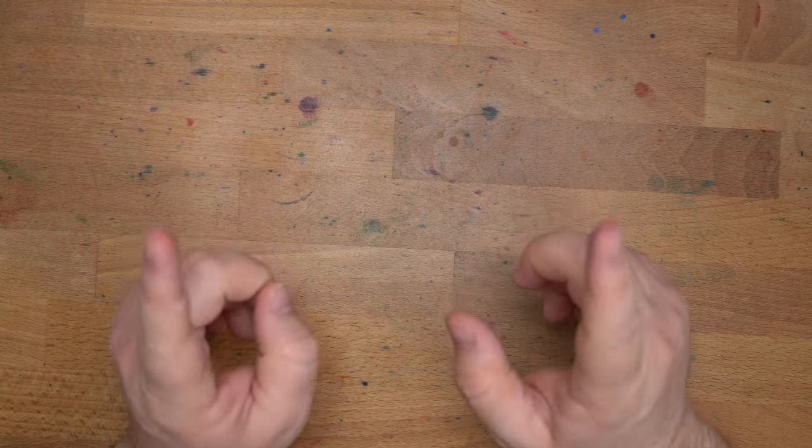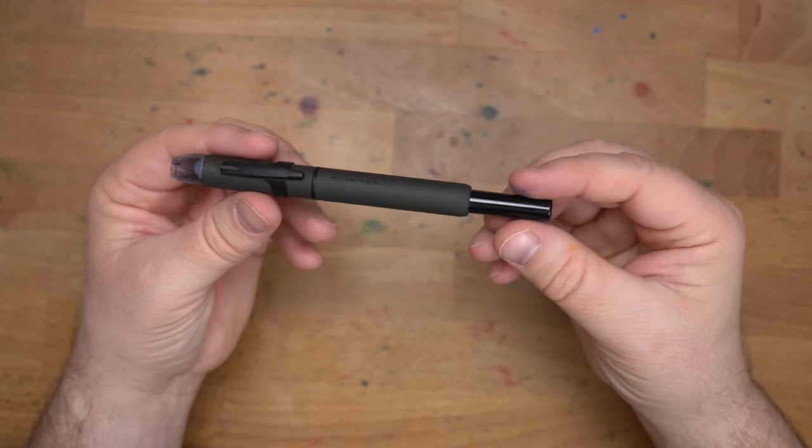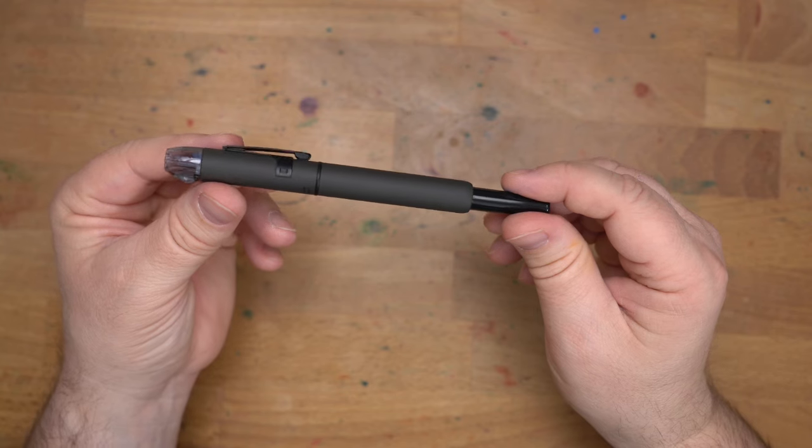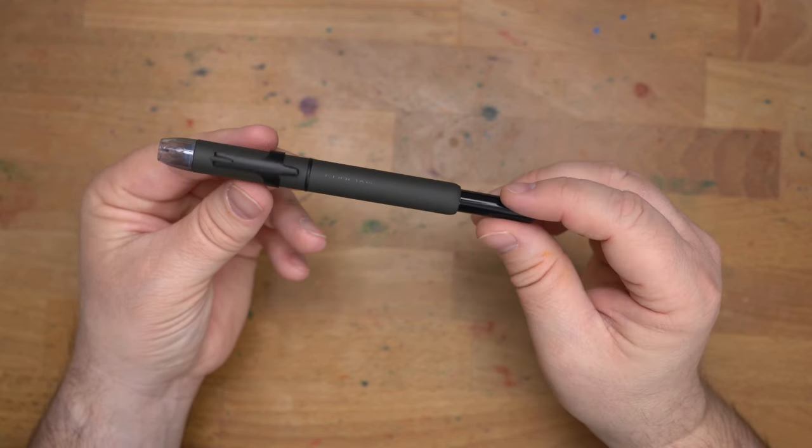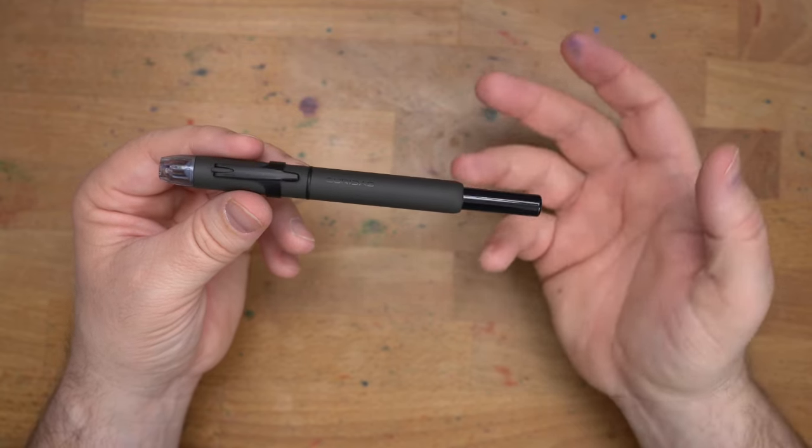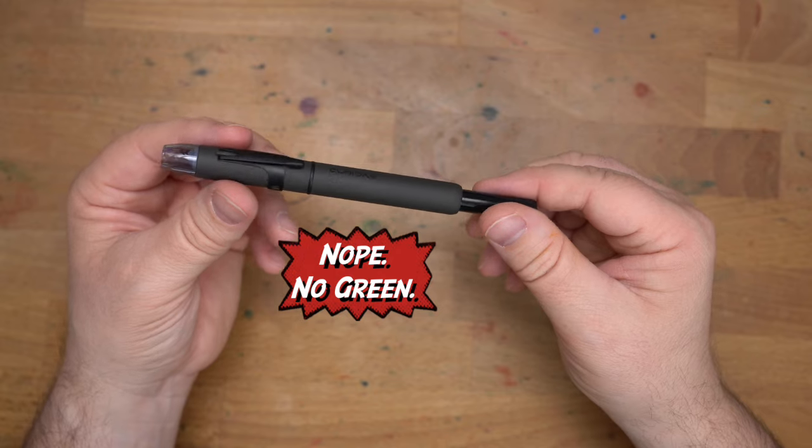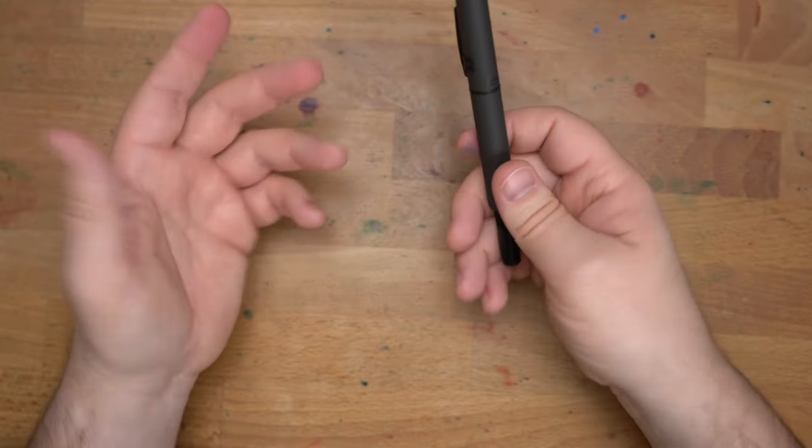Hello folks, welcome to InkDependence. I'm Mike. And today I have a pen for you that you've seen on the channel before a time or four. This is the Platinum Curidas. This one here is the matte version, which I believe is the most recent version of this pen. This is, of course, matte black. It does come in, I want to say, a blue and a red as well. Maybe a green? I don't know. A few colors, and I'm sure they'll add more.